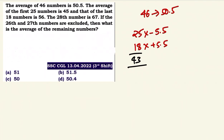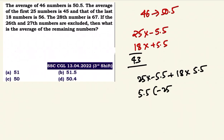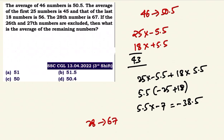If the 26th and 27th numbers are excluded, what is the average of the remaining numbers? The average of the remaining numbers is equal to deviation 3.5. The 28th number is 67, which gives deviation 16.5 from 50.5. So that's how we can work with these deviations.